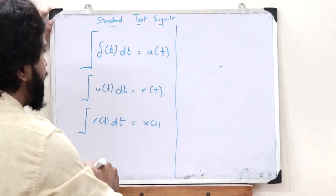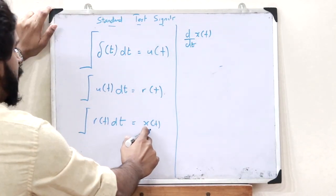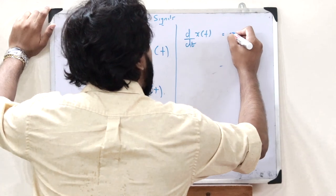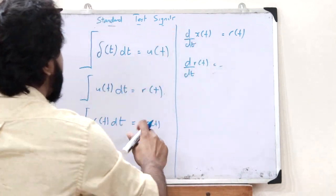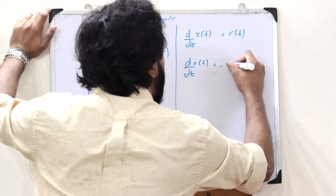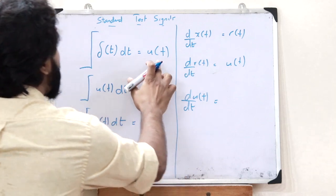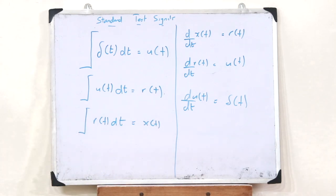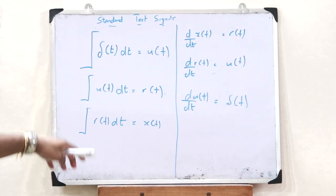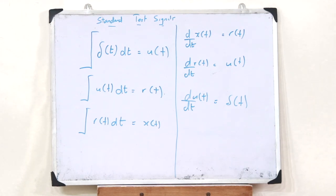On the contrary, by taking differentiation: d/dt of a parabolic signal gives a ramp signal. d/dt of a ramp signal gives a step signal u(t). And d/dt of u(t) gives an impulse signal. This shows the relationship between the 4 standard test signals: an impulse signal, a step signal, a ramp signal, and a parabolic signal.